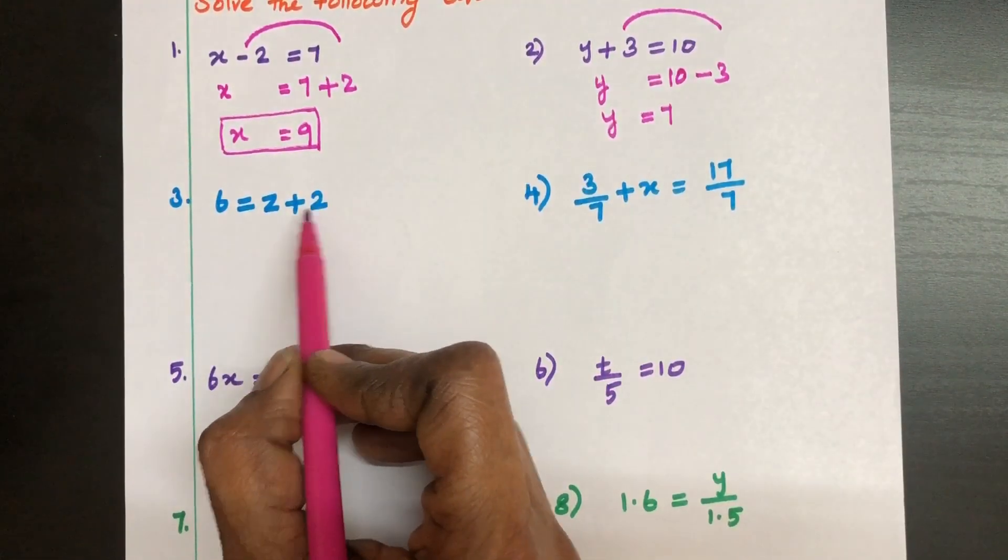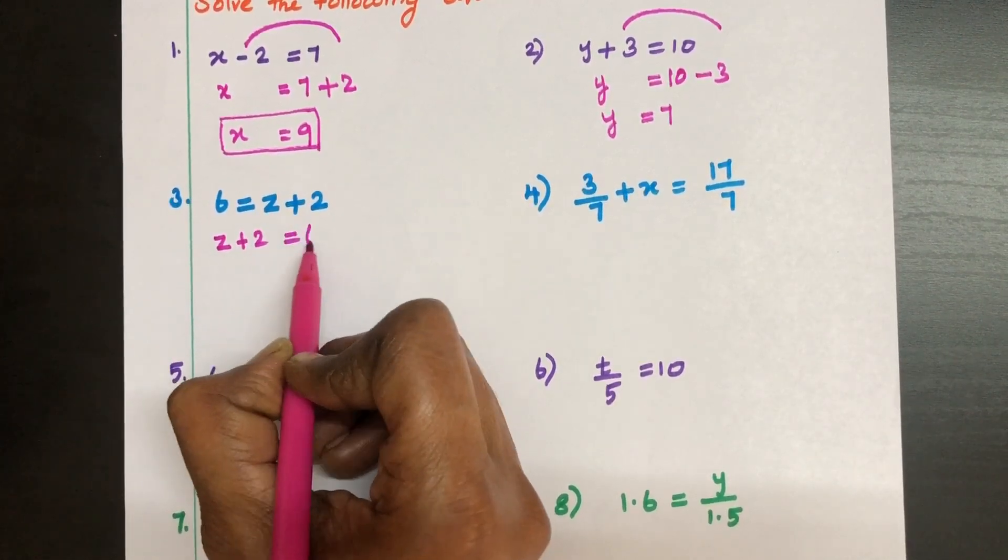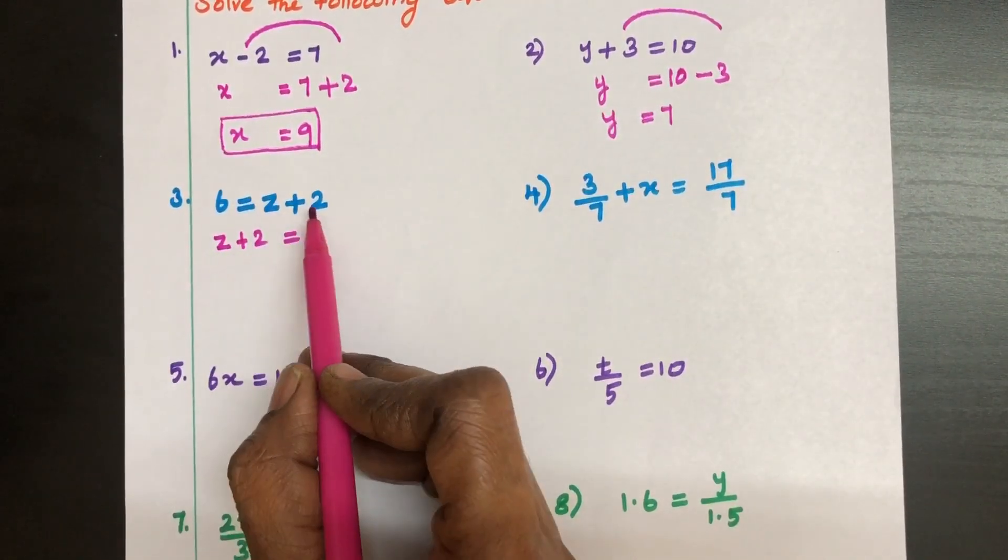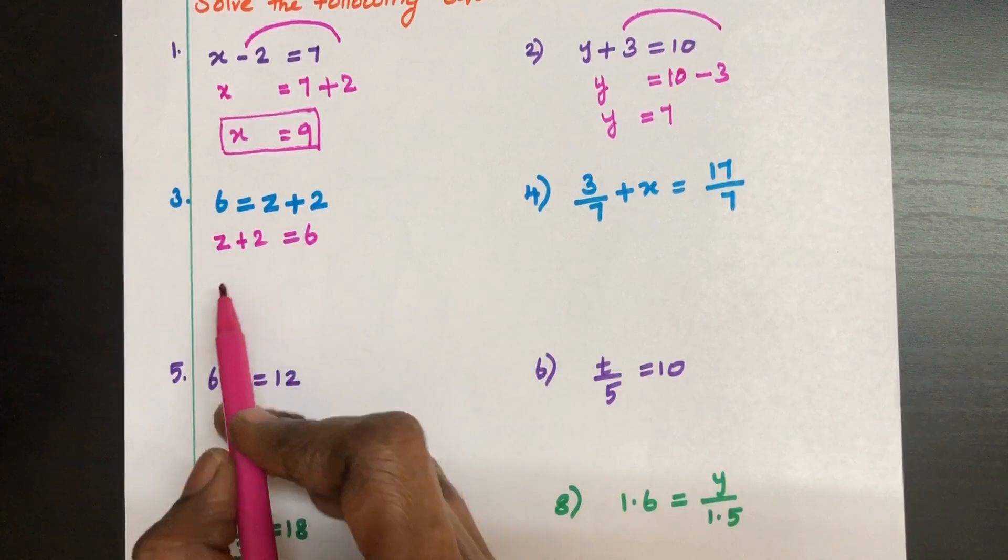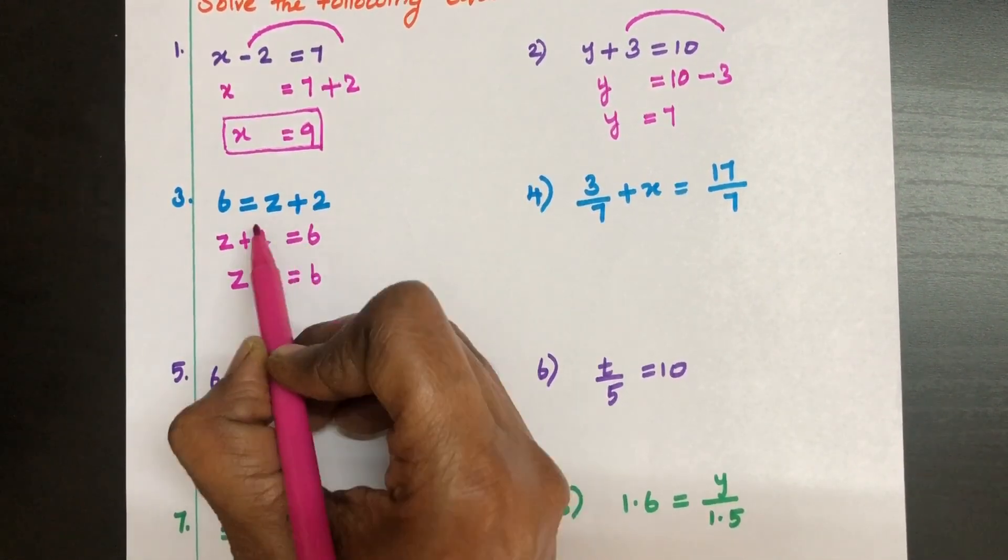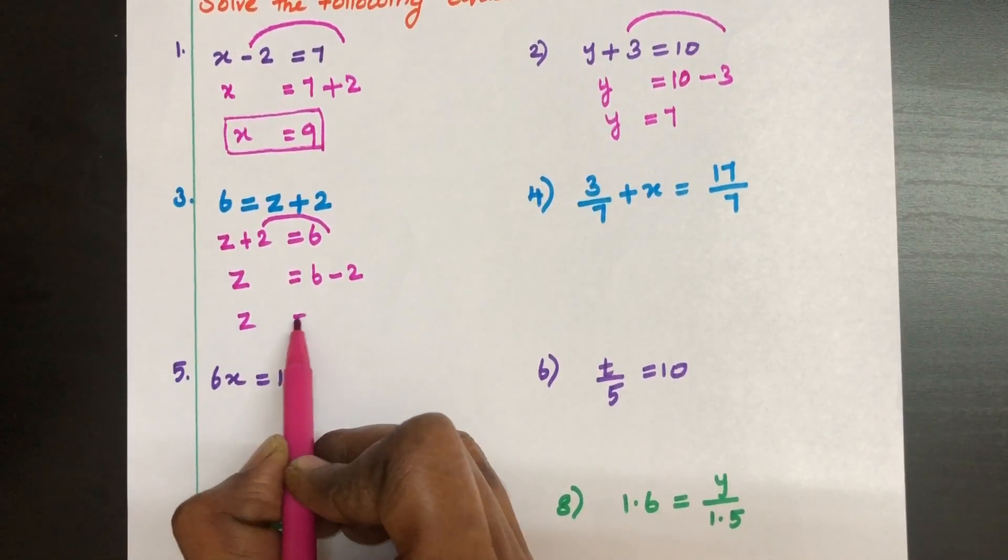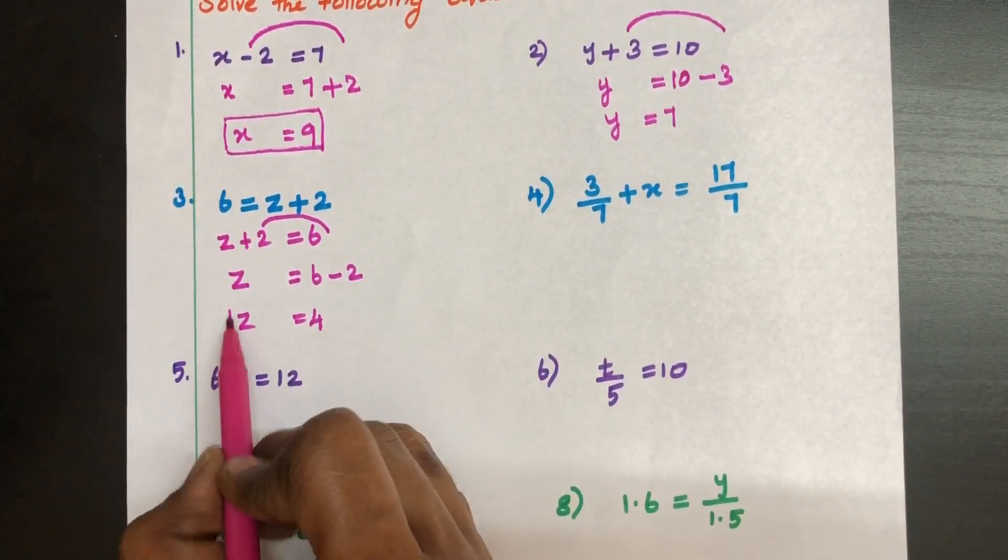6 equal to Z plus 2. So we can write Z plus 2 is equal to 6. We can write RHS as LHS, LHS as RHS. Now Z equal to 6, taking this here minus 2. Z equal to 4 is the answer. This is our solution.